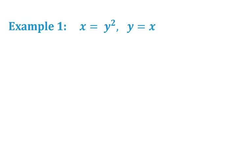So our first example has x equals y squared—hopefully you can picture that as a parabola opening to the right—and then the line y equals x, just our linear equation with a slope of 1.